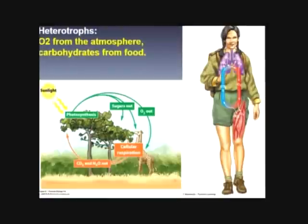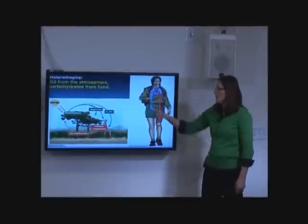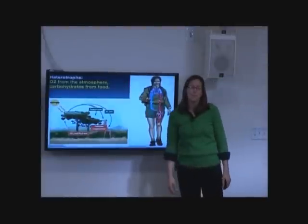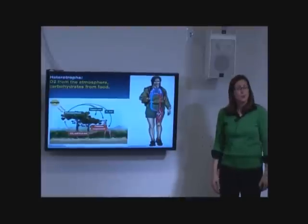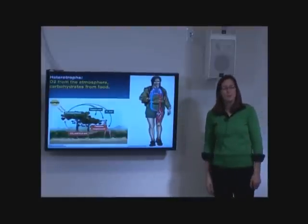In terms of heterotrophs, where we get O2 as well as carbohydrates, it's all extraneous. We have to have these systems in order to bring in carbohydrates and oxygen. So we have heart, lungs, blood vessels, all of that to be able to bring in oxygen to carry carbohydrates from food. So obviously from the atmosphere and from food for heterotrophs. So very different in terms of aerobic respiration.